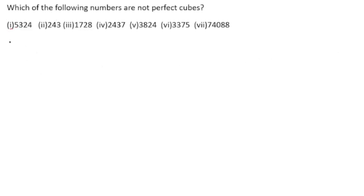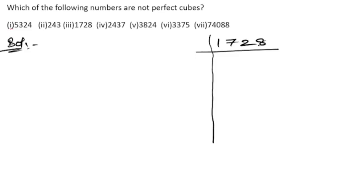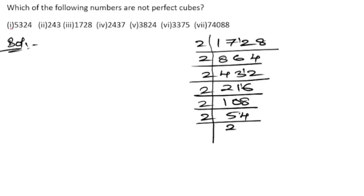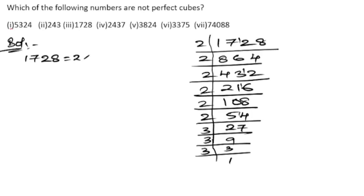Now let us solve the third number: 1728. Since the last digit is 8, we divide by 2. Dividing repeatedly by 2, then by 3, we find the factors of 1728 are 2 × 2 × 2 × 2 × 2 × 2 — that is six 2s.